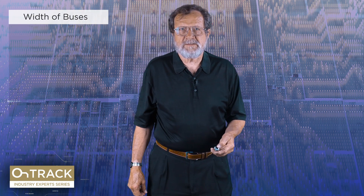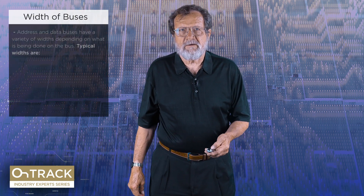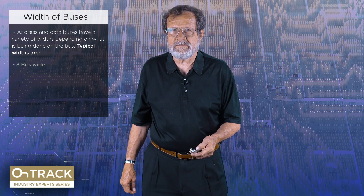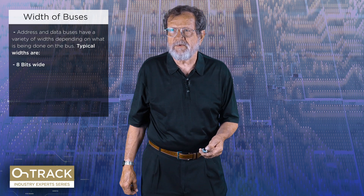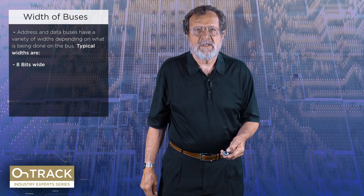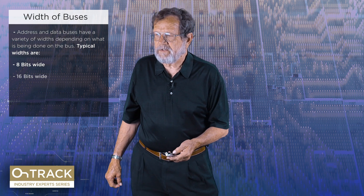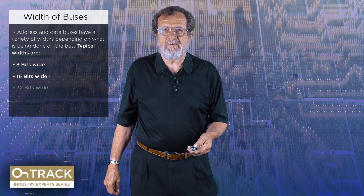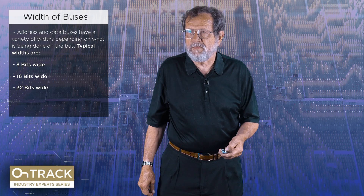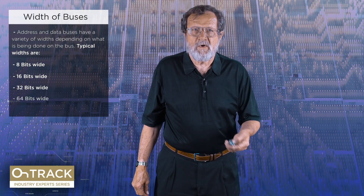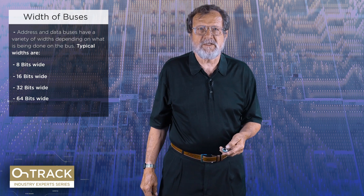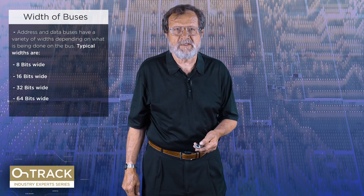Let's talk about the width of buses — there are quite a few varieties. The original PC microprocessor had an 8-bit wide bus for both data and address. When we got more capability, they went to 16 bits wide and then 32. Current PCs are mostly 64 bits wide. Why do we want to make the bus wider? We can do more work in a given clock cycle when we do that — that's the whole motivation for doing this.